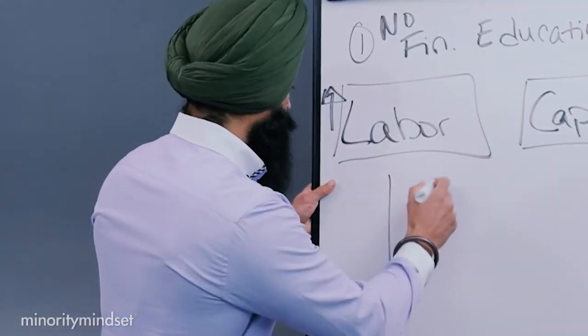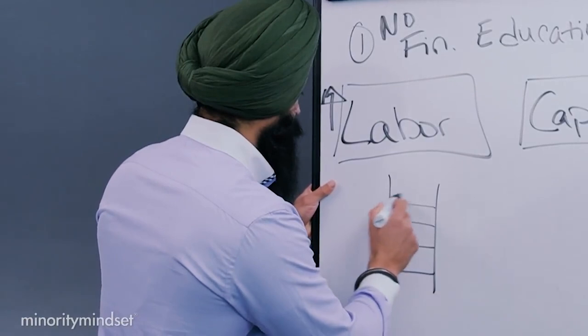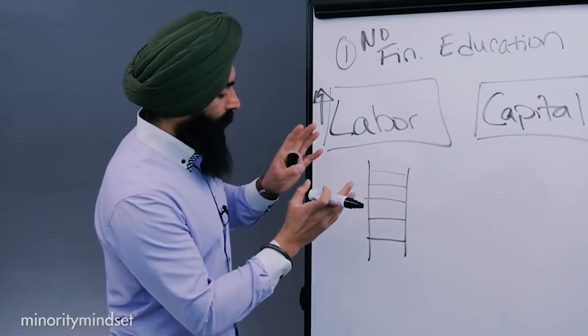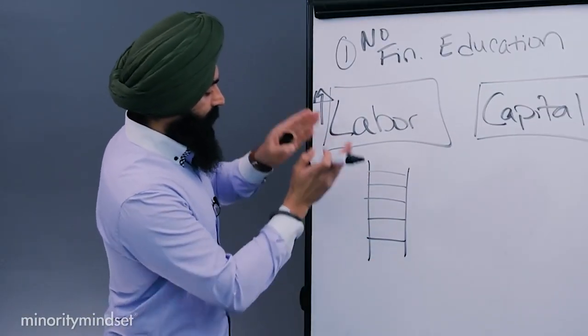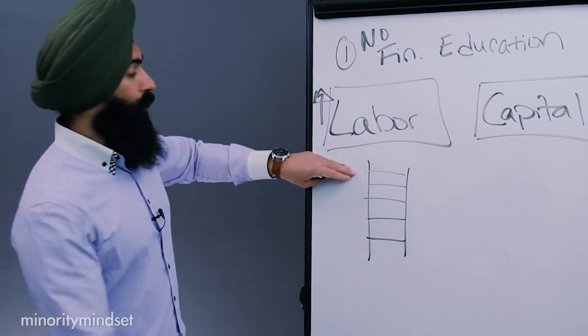So this is what school teaches us how to maximize. This is our corporate ladder. You go from analyst to associate to VP to director to the CEO. You go to the C levels.